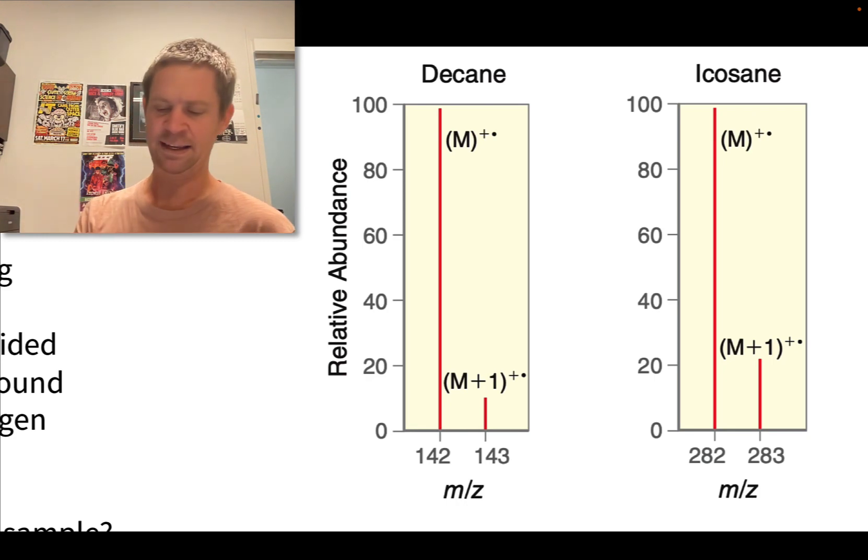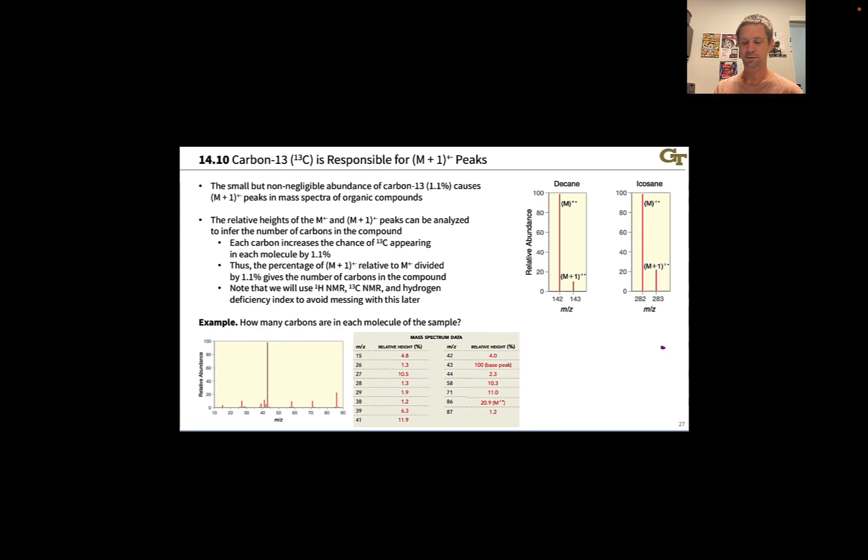Instead, the M+1 peak can be attributed to the prevalence of carbon-13 in some of the molecules of the sample.